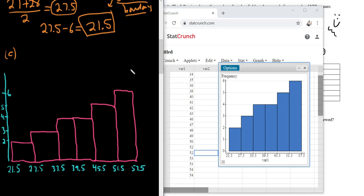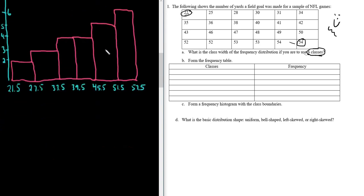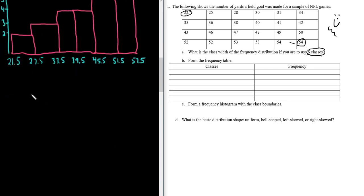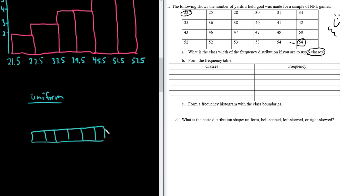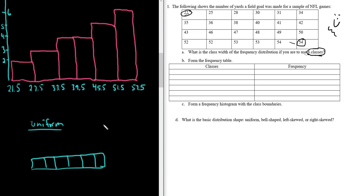Part D asks for the basic distribution shape: uniform, bell, left skewed, or right skewed. Uniform means it doesn't change — it's roughly constant. This is not uniform. Bell shaped looks like a bell curve — this is not bell shaped either. Looking at our histogram, the answer is left skewed.